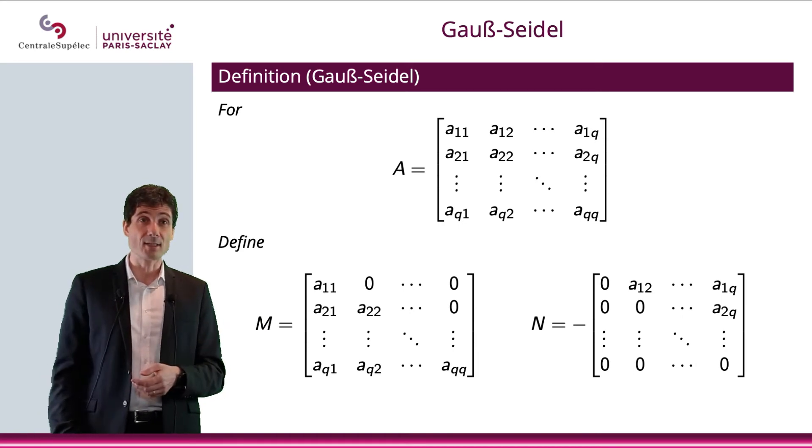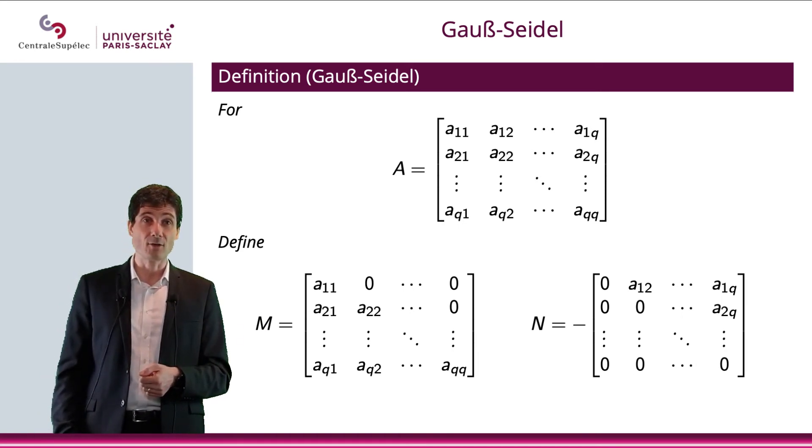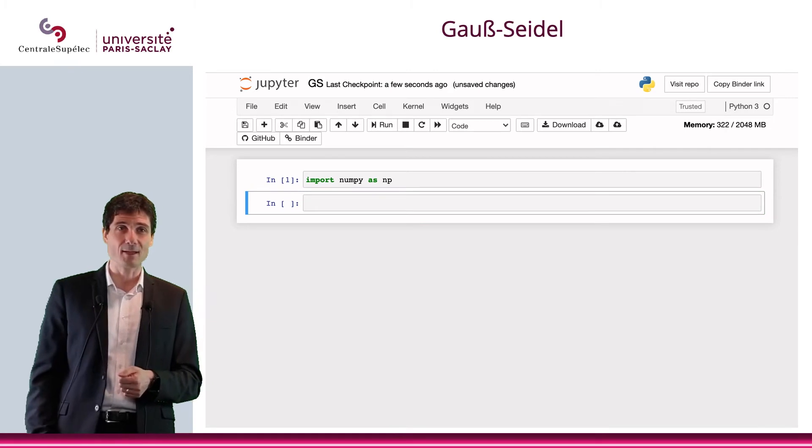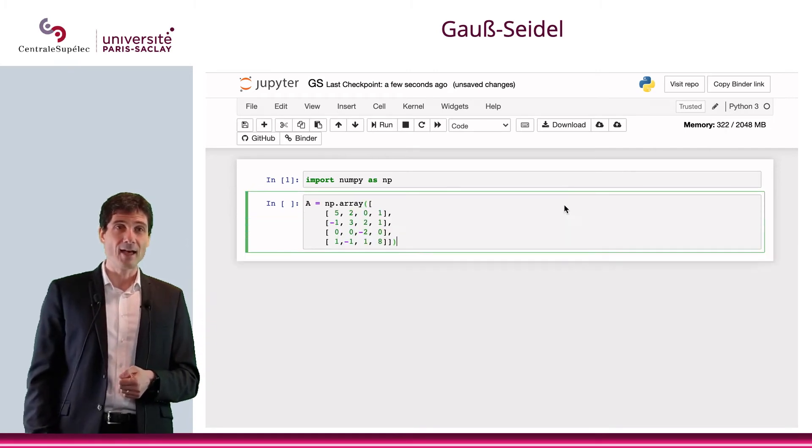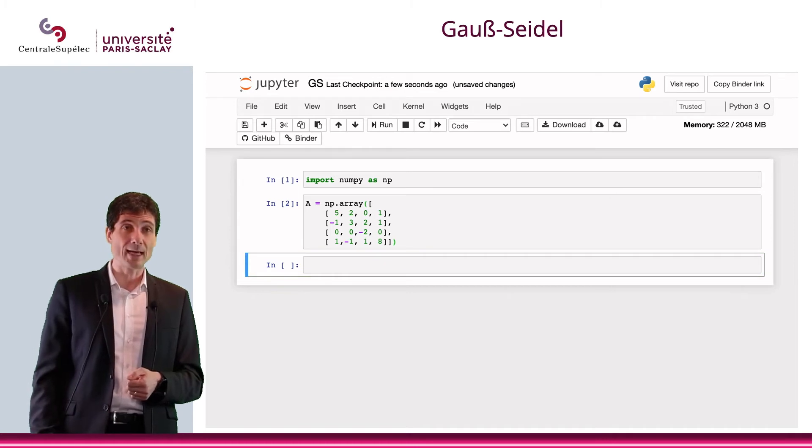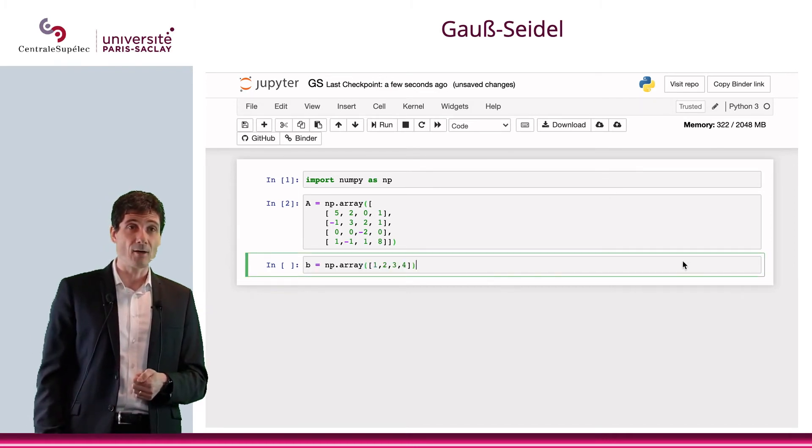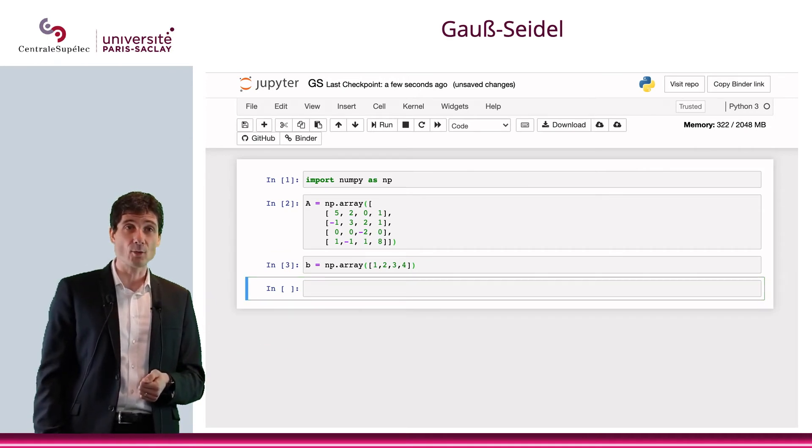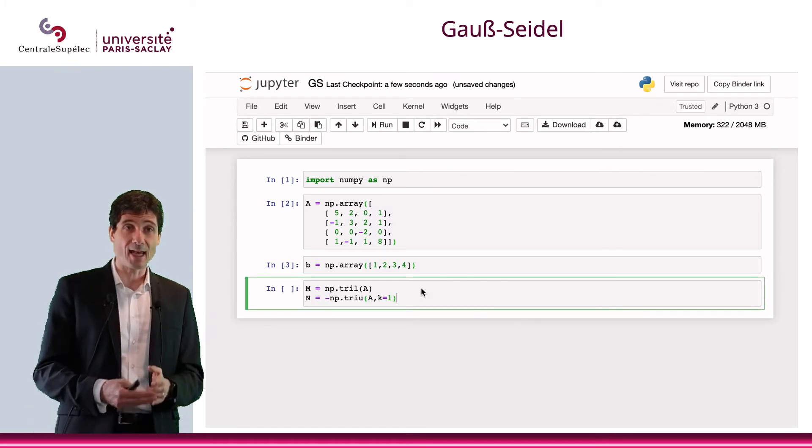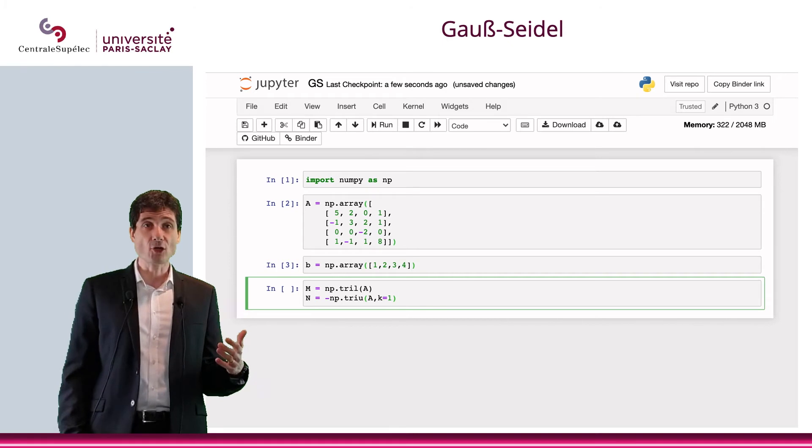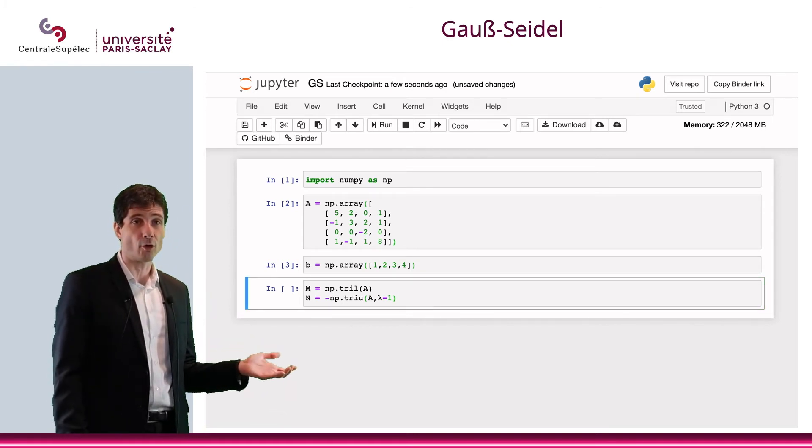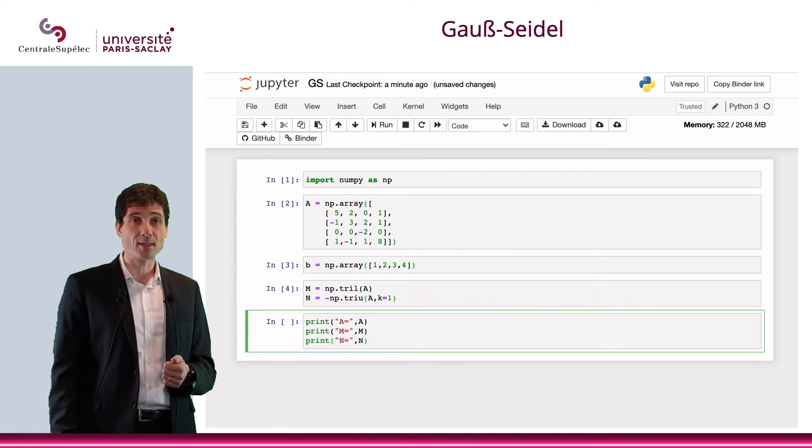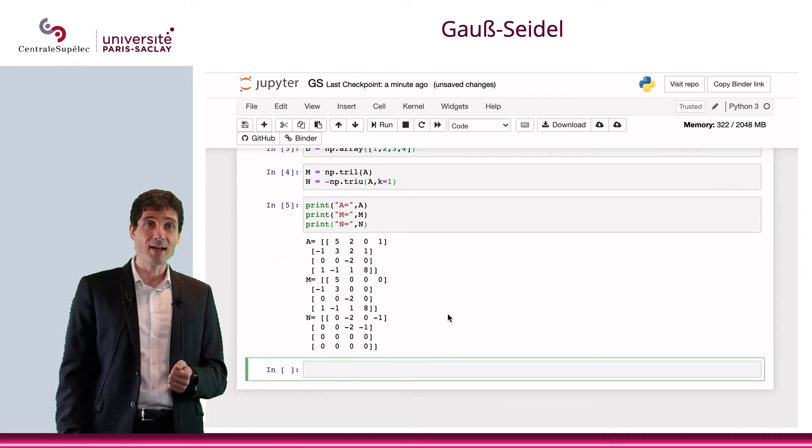And let's actually try to see if, let's actually put this together. So, again, I'm going to call numpy as usual to enter my matrix A that we have been using so far. And I'm going to enter the vector b, which, again, will be 1, 2, 3, 4. And at this point, what I will do is to enter the matrix M and the matrix N. So I'm using two functions here, which is tril for lower and triu for upper. And then here is M and N. I'm printing all three matrices, making sure that no mistakes were made.